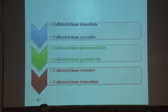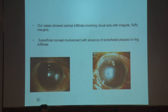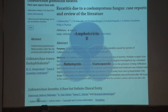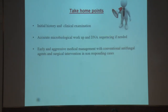Previous reports of Colletotrichum keratitis from India were of the truncatum species, first reported in 2004, followed by reports of dematium and graminicola. Colletotrichum asianum has not been reported from India till now. The cases showed central infiltrate involving the visual axis with irregular fluffy margins, superficial corneal involvement, and absence of endothelial plaques and ring infiltrate. Treatment is not tailored by species, but initial case reports showed good response to natamycin; subsequent reports described a preferable MIC for amphotericin B. Correct species identification is needed to avoid further progression.